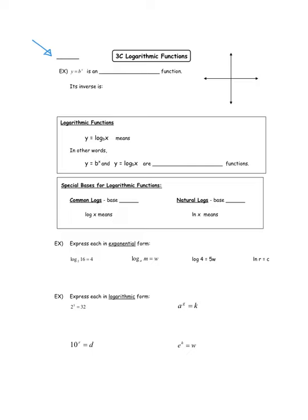Today we're going to define what a logarithm is, and we start by thinking about exponential functions. So y equals b to the x is an exponential function — it's the parent function. We know that we can look at them in two different ways: one from the perspective of growth and one for decay. Today I'm just going to draw the growth model, so this is what y equals b to the x looks like, and our focus is going to be on its inverse.